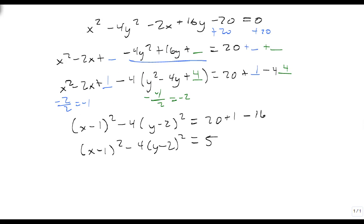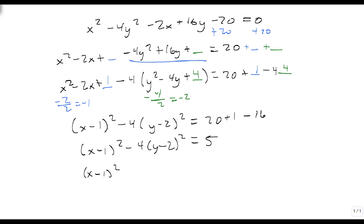Divide by 5, and we have x minus 1 squared over 5 minus 4 fifths times y minus 2 squared equals 1.